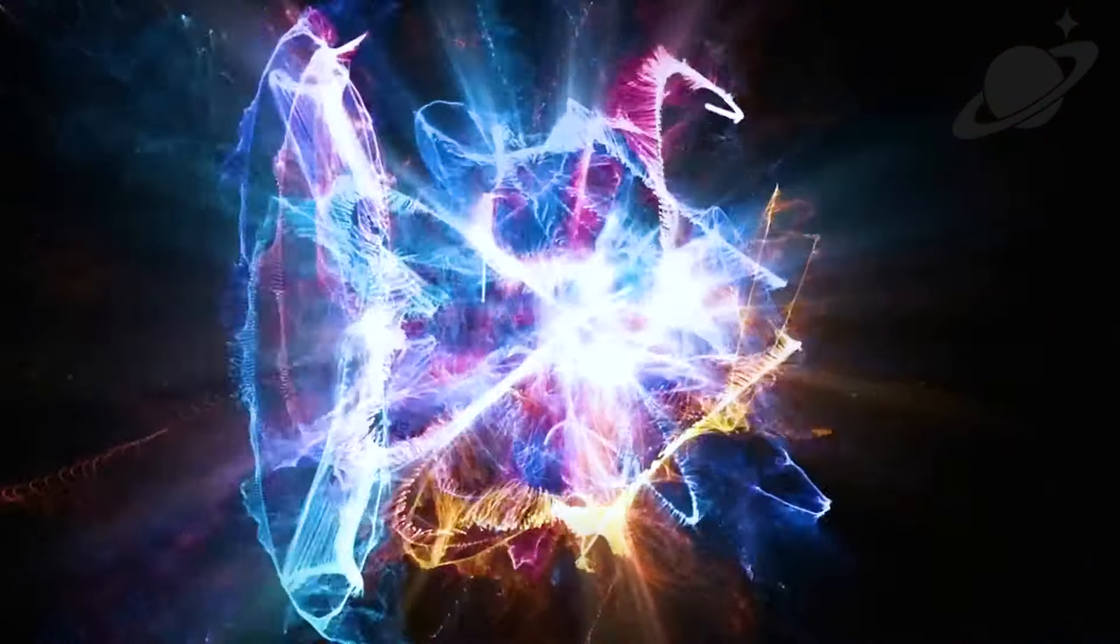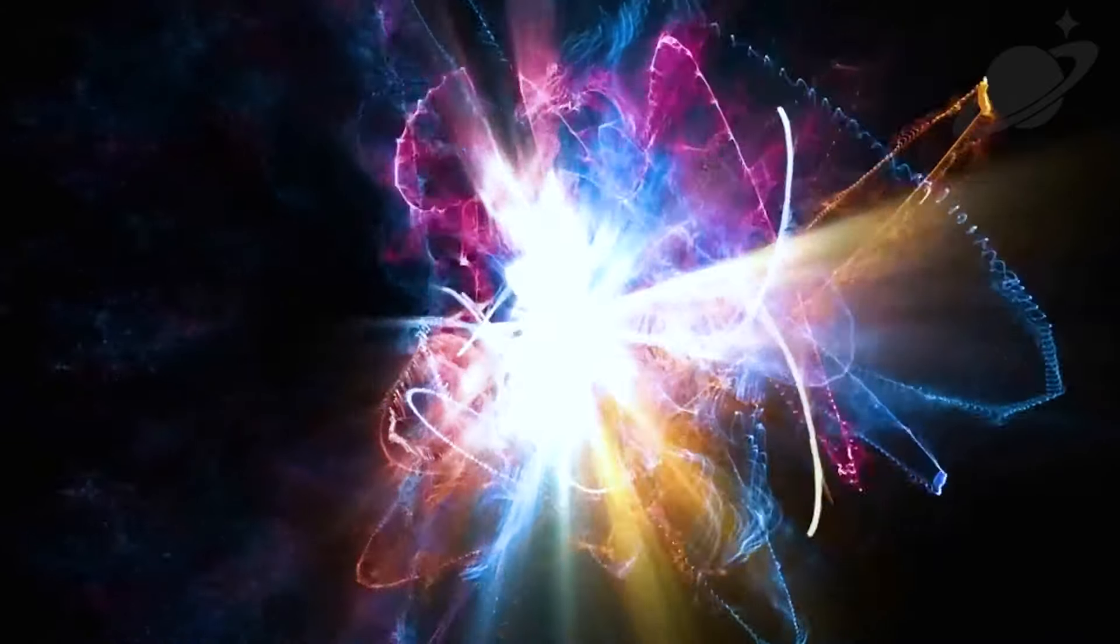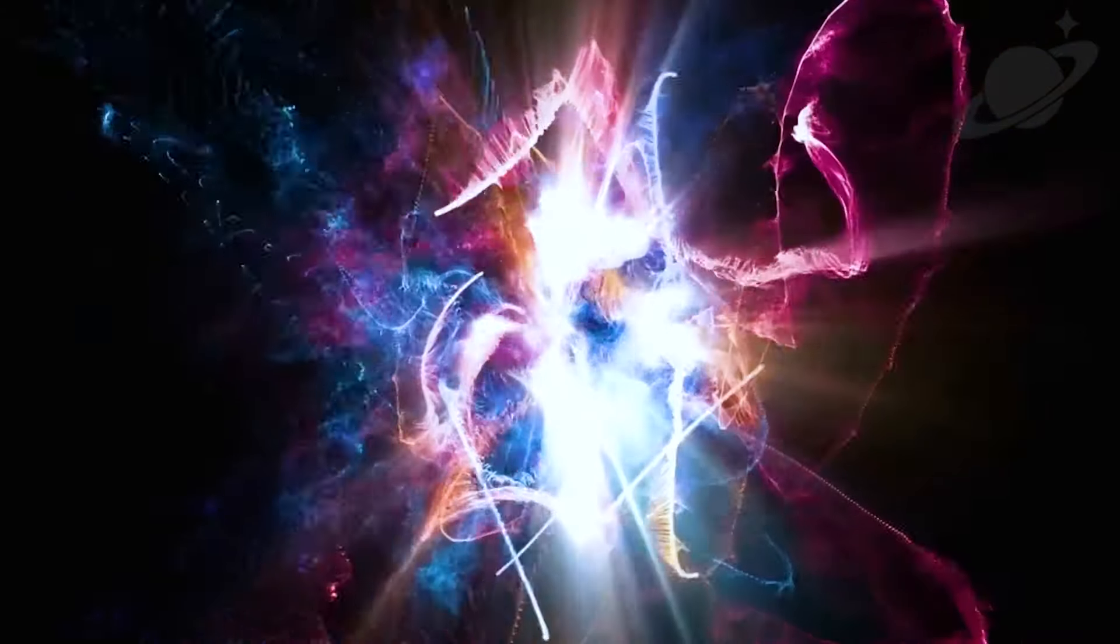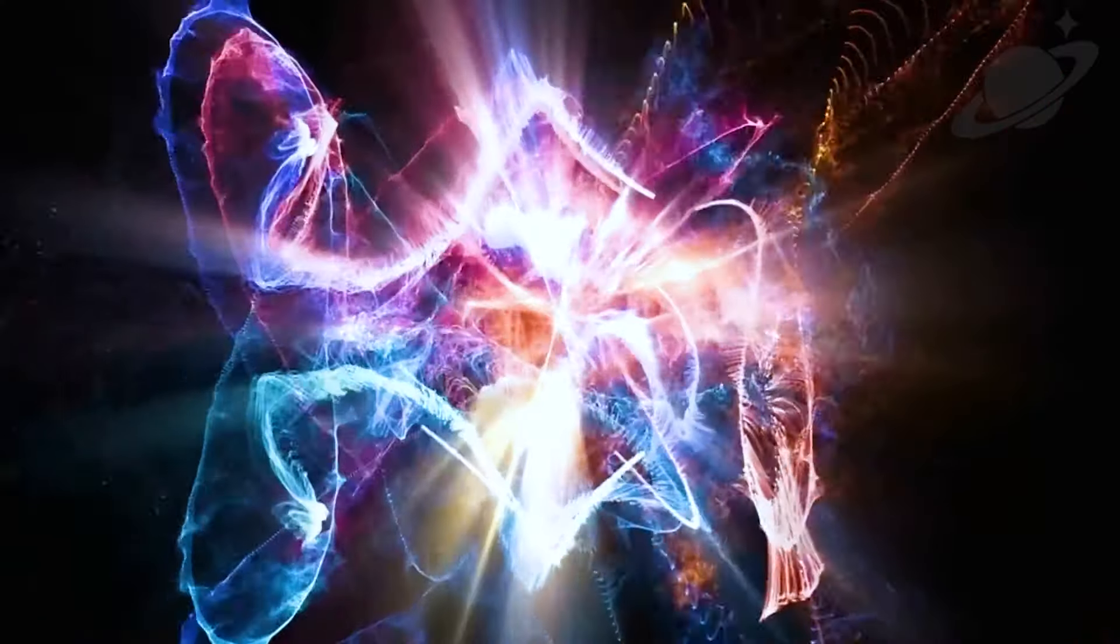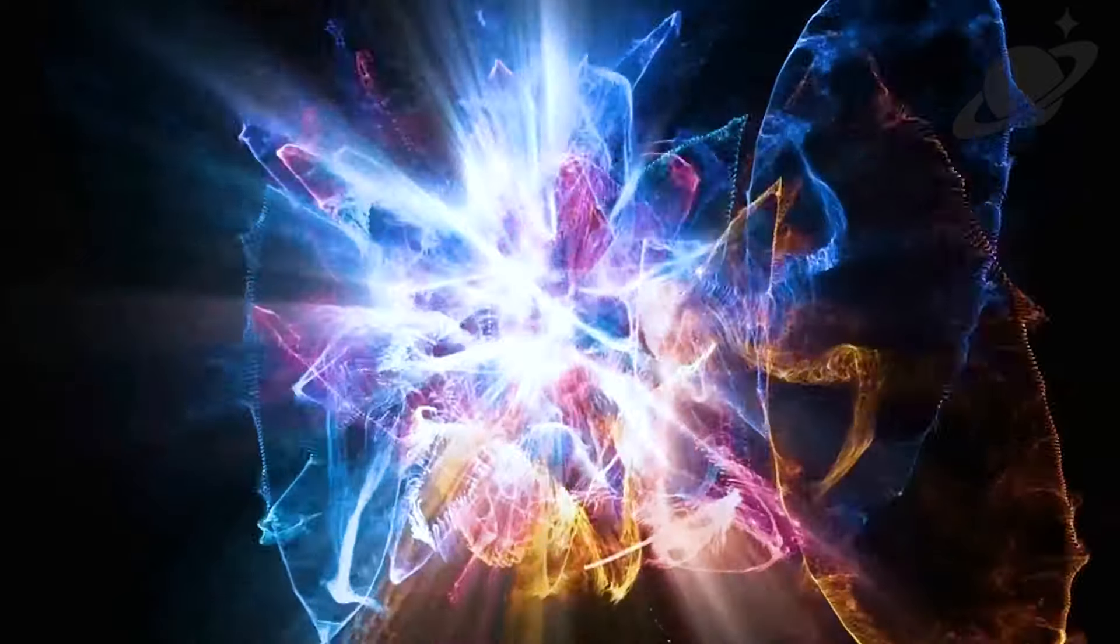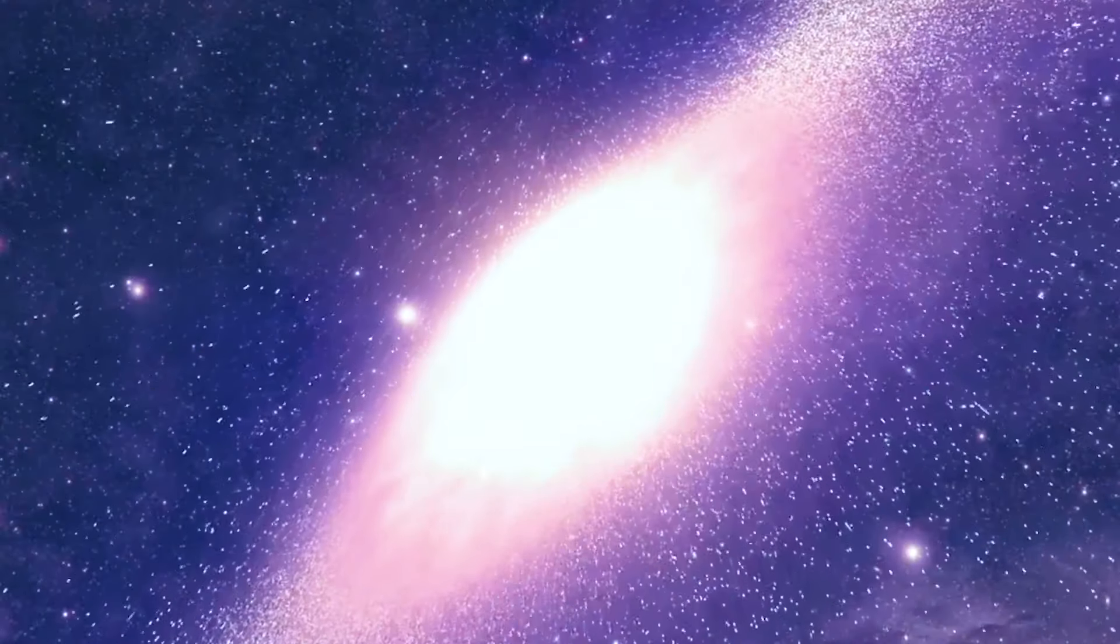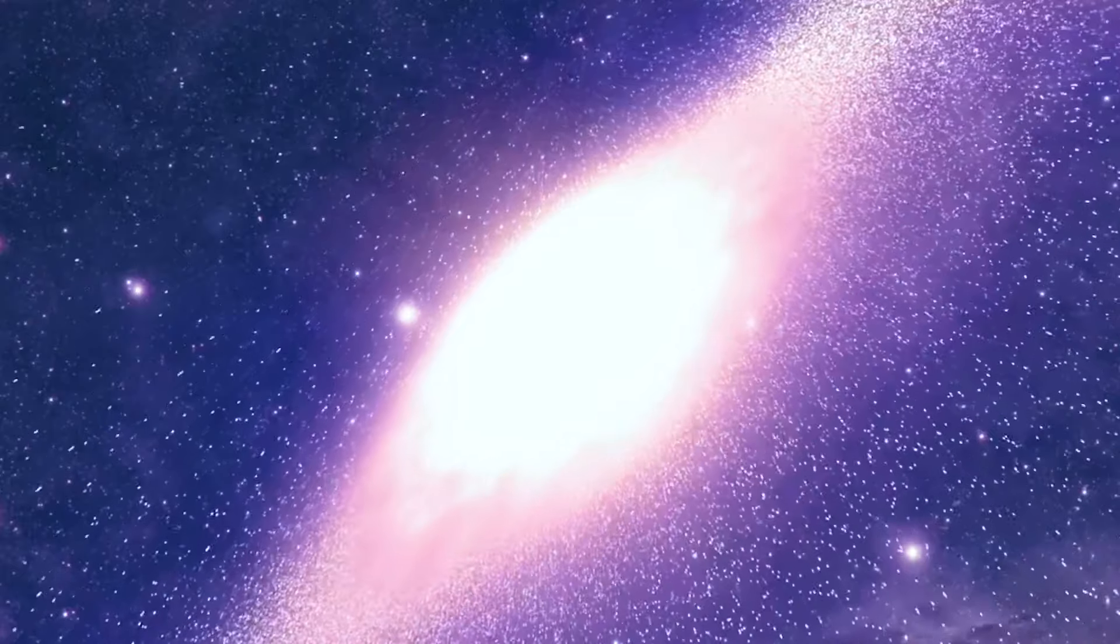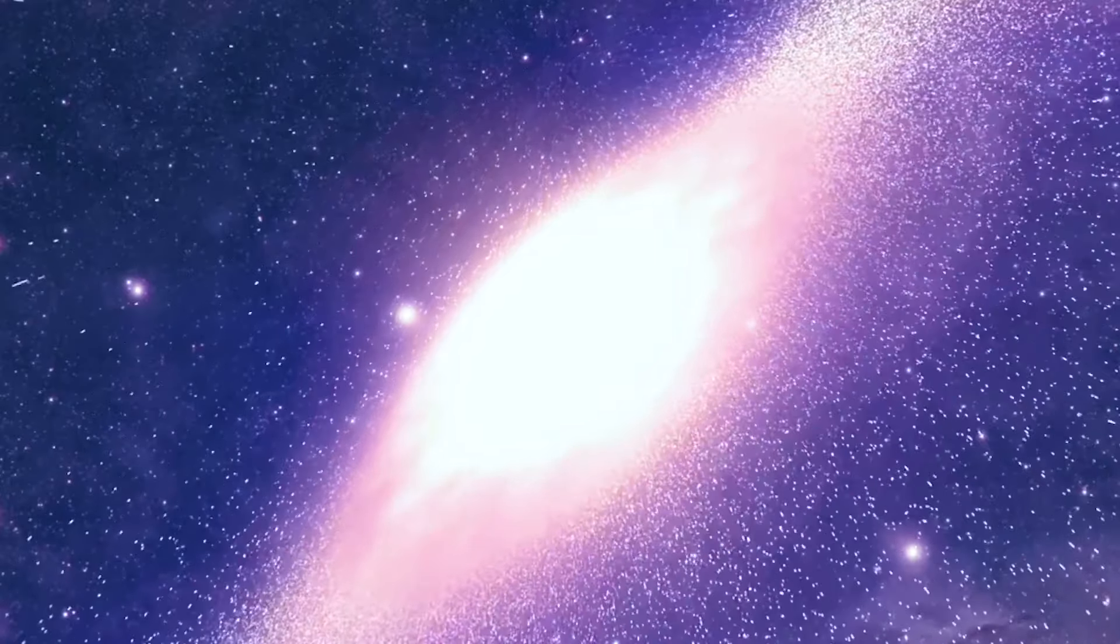It wasn't until the later half of the 1900s that people really started paying attention to cosmic voids. In the 1970s and 80s, studies using redshifts, a way to measure how far away galaxies are, showed that the universe's structure isn't random at all. Instead, galaxies seemed to form a kind of cosmic web, leaving huge empty spaces in between them.